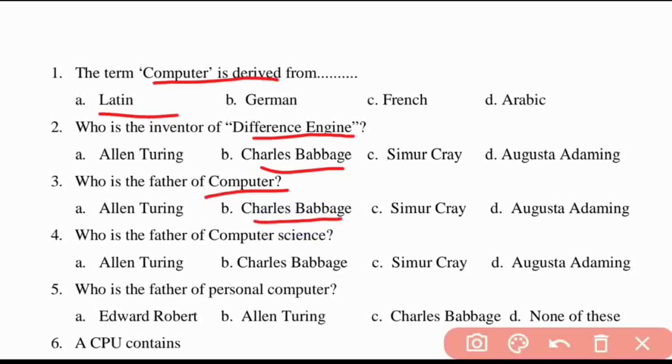Fourth question: who is the father of computer science? He is Alan Turing.